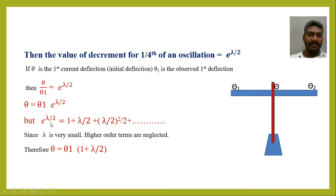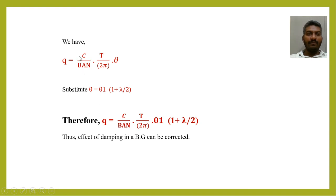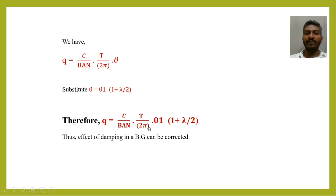Expanding e^(λ/2) gives 1 + λ/2 + (λ/2)²/2 + ... Since λ is very small, we can neglect higher order terms. Therefore, θ ≈ θ1 × (1 + λ/2). Substituting into the ballistic galvanometer equation Q = C/BAN × T/2π × θ, the corrected equation becomes Q = C/BAN × T/2π × θ1 × (1 + λ/2). Thus, the effect of damping in BG can be corrected.